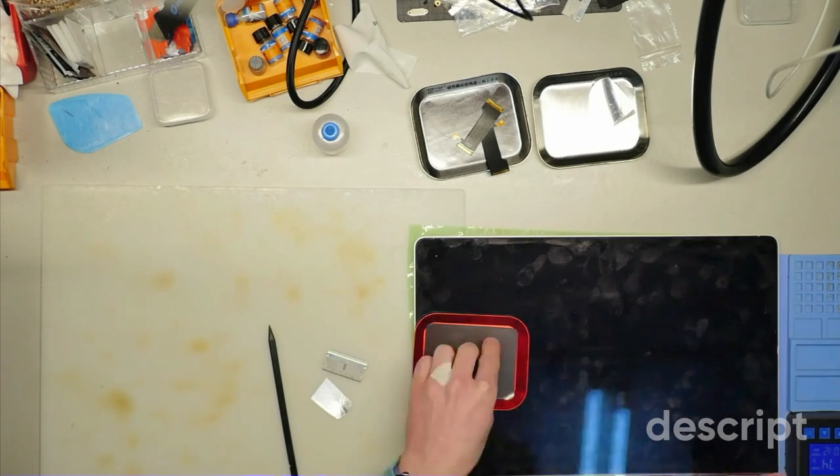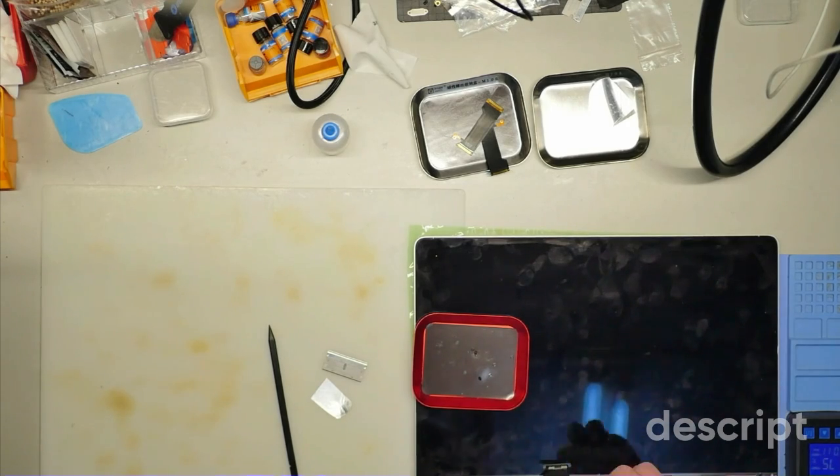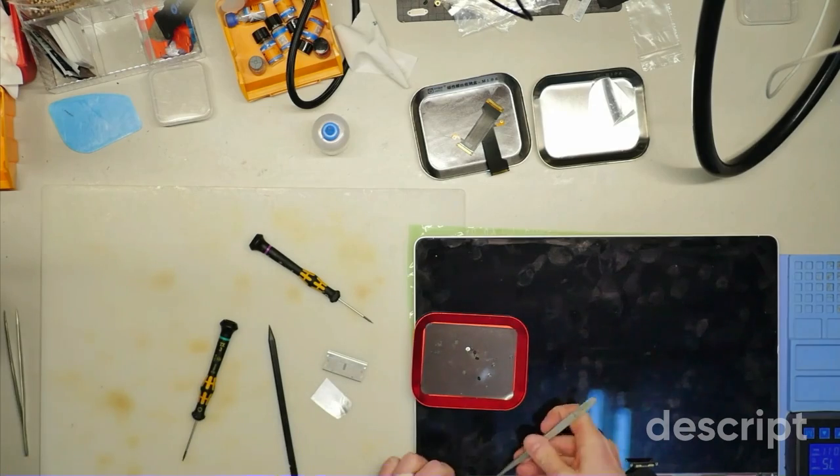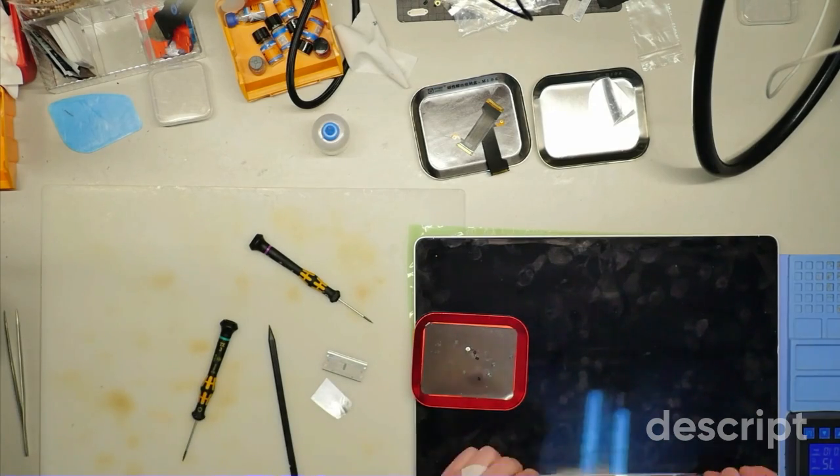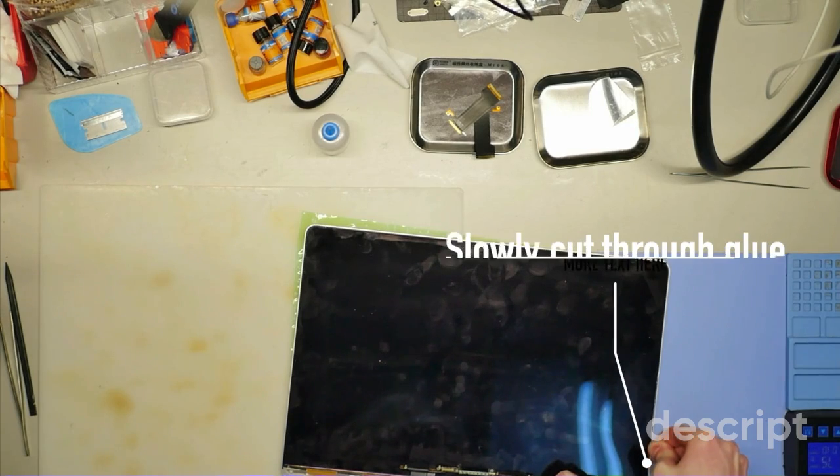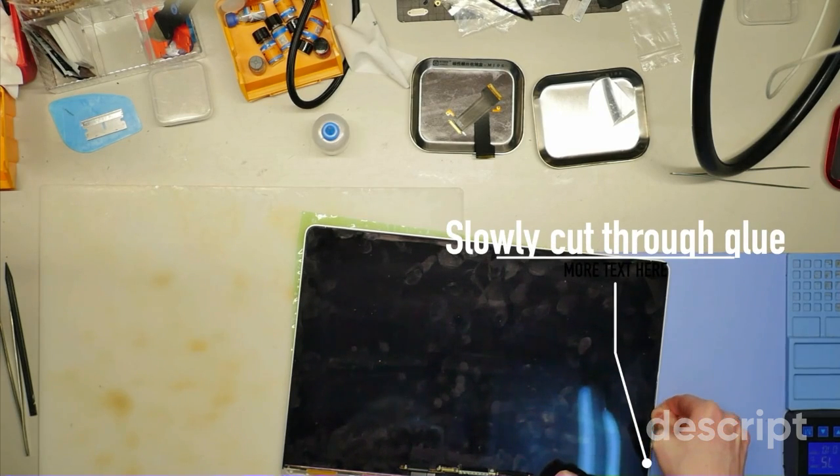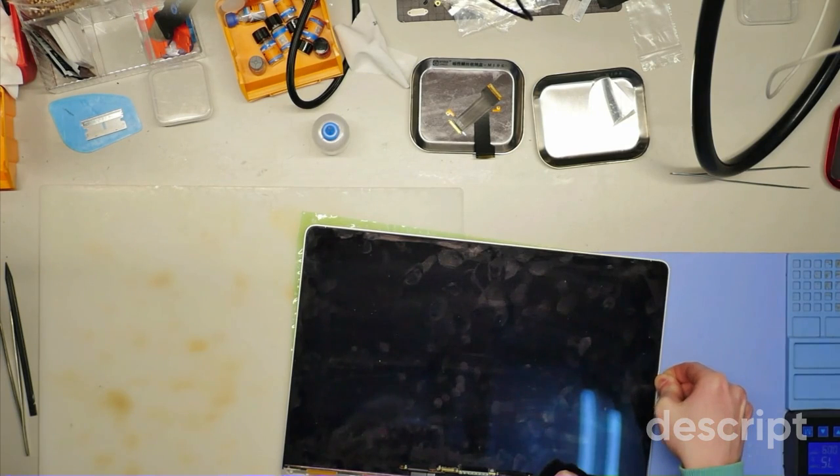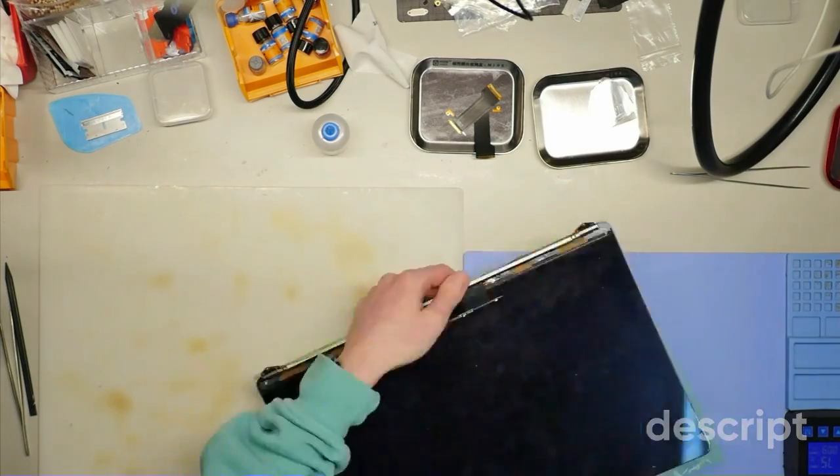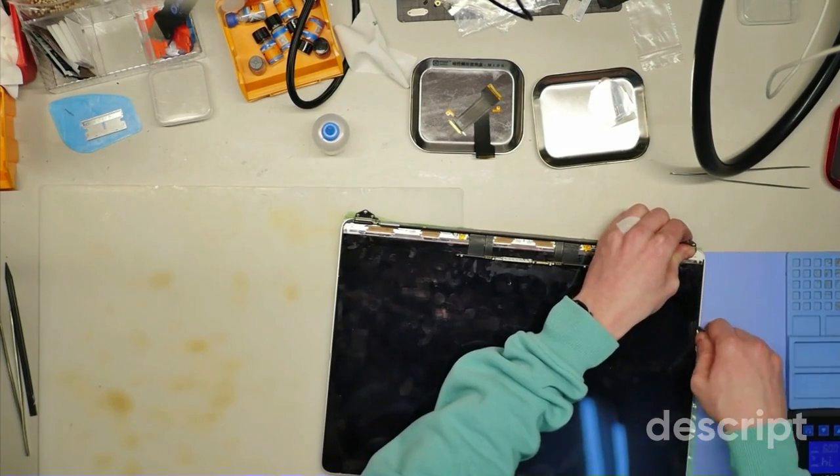The main tool to remove the glue or to cut through it would be just backlight foil. You take it from some broken screen—just a normal, thick one. Cut it into pieces without any sharp edges, and then you slowly move through the screen. The screen should be warm, so I usually put it on a heating mat at around 70 degrees Celsius.